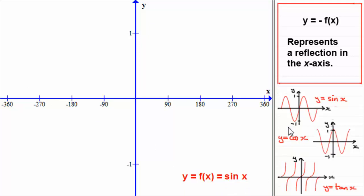So if we're to do this transformation here, minus f of x, it means that we need to multiply f of x by negative one. So we're going to get y equals minus f of x, which equals minus sine x.